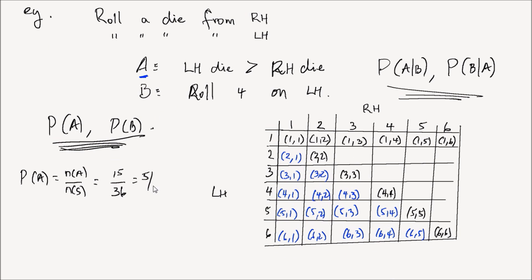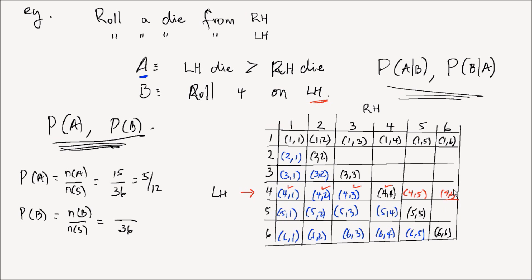The probability of B is the number of elements in B divided by the number of elements in the sample space, which is 36. Event B is the event that you roll a number four on the left hand, so that means looking at the elements in row number four: (4,1), (4,2), (4,3), (4,4), (4,5), and (4,6). Those are in B — six elements total. So P(B) = 6 over 36, which is 1 over 6.